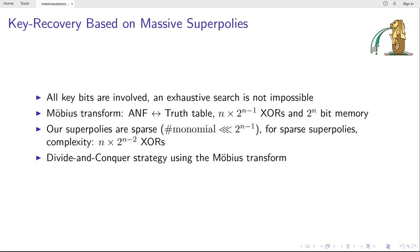As is well known, Möbius transform is well known as the transformation between the ANF and the truth table of a Boolean function. The complexity is n times 2^(n-1) bit XOR and the memory is 2^n bits. Our Super-Polys are actually sparse although they are massive. Because comparing to randomly chosen polynomials, the number of monomials are much less.